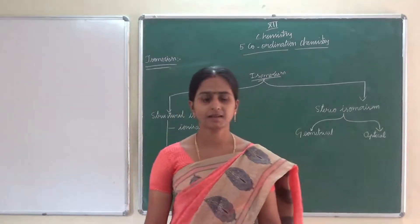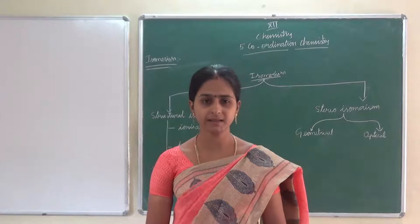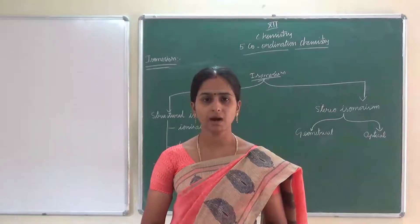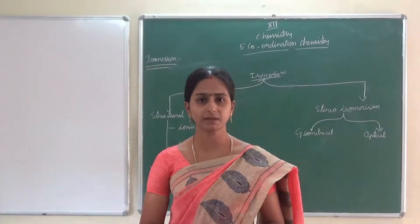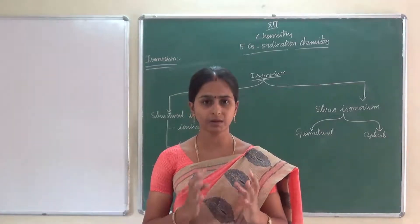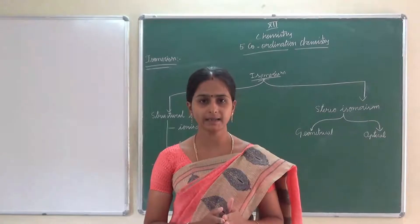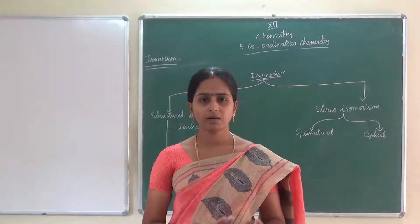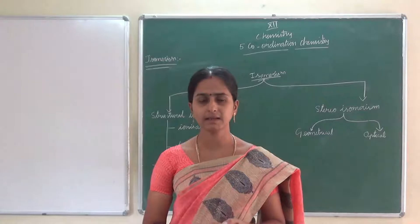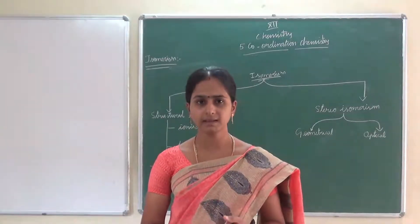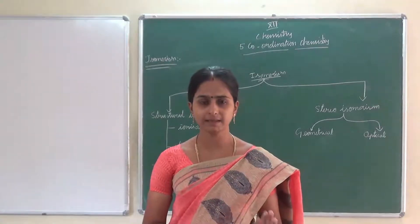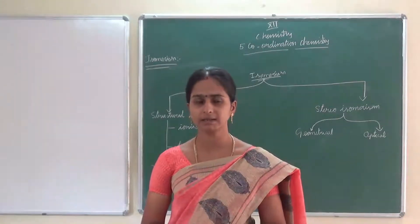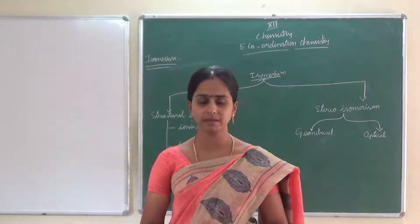Good morning children. Now we are in lesson number 5, Coordination Chemistry. In this lesson we have discussed about what is a coordination compound, how we can differentiate it from double salt, what are all present in this coordination compound — central metal atom, ligand, coordination number, oxidation state, counter ions. Then we have learned about Werner's theory, about primary valency and secondary valency. Then we have learned about the IUPAC nomenclature — the naming of these coordination compounds.